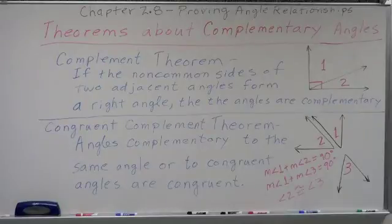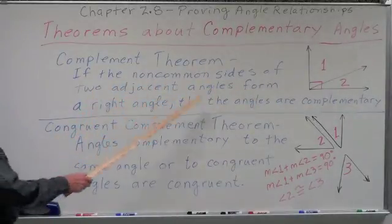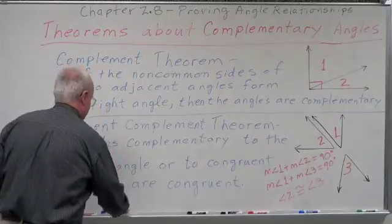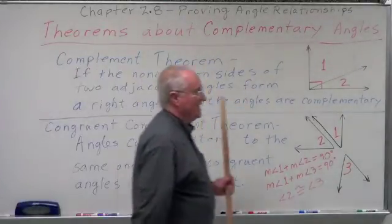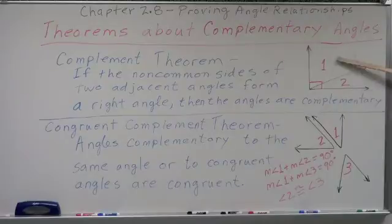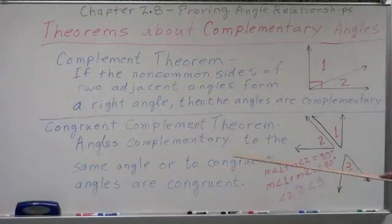If we talked about the relationship between supplementary angles, then we also have to talk about the relationship between complementary angles — two very similar theorems. The complement theorem states: if the non-common sides of two adjacent angles form a right angle, then the angles are complementary. The common side is between the two angles. If the two non-common sides make a right angle, then these two angles are complementary — in other words, they add up to 90 degrees.